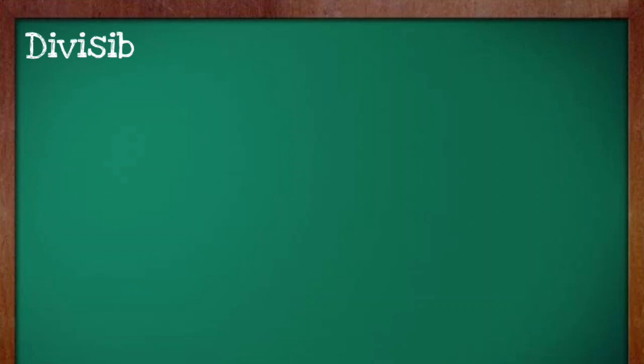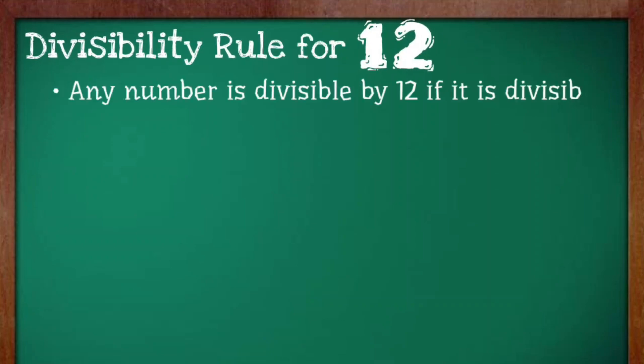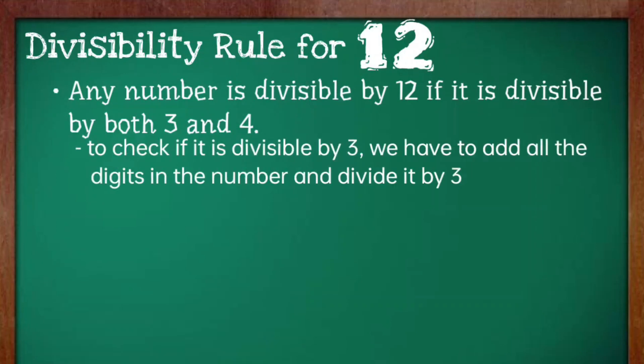And now, divisibility rule for 12. Any number is divisible by 12 if it is divisible by both 3 and 4. To check if it is divisible by 3, we have to add all the digits in the number and divide it by 3.